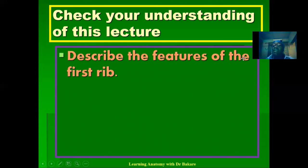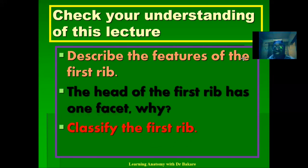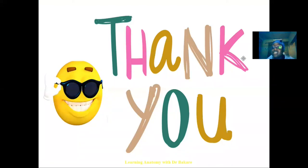We can check our understanding of this lecture through the following questions: Describe the features of the first rib. Can the fact that the head of the first rib has one facet be justified? Classify the first rib in terms of structure and also in terms of attachment points. Thanks for watching — let's meet again.